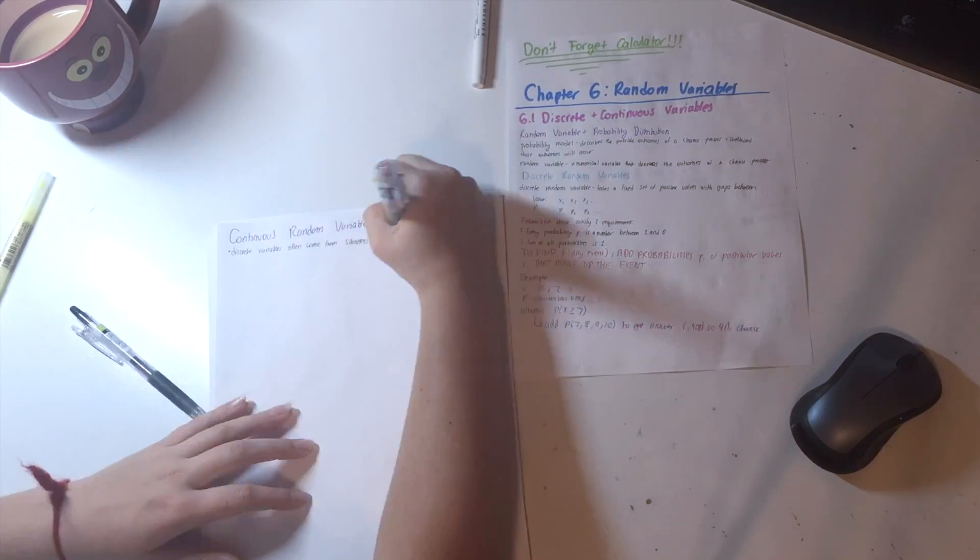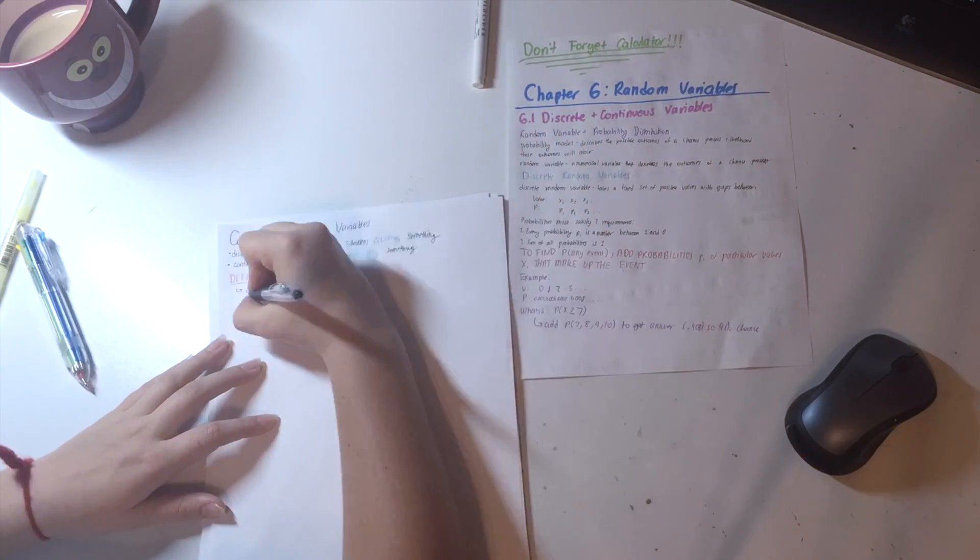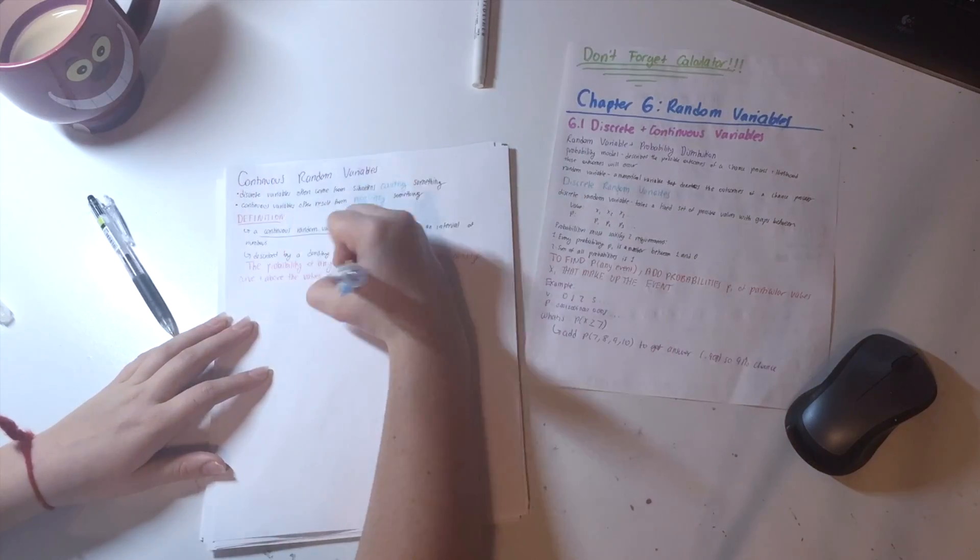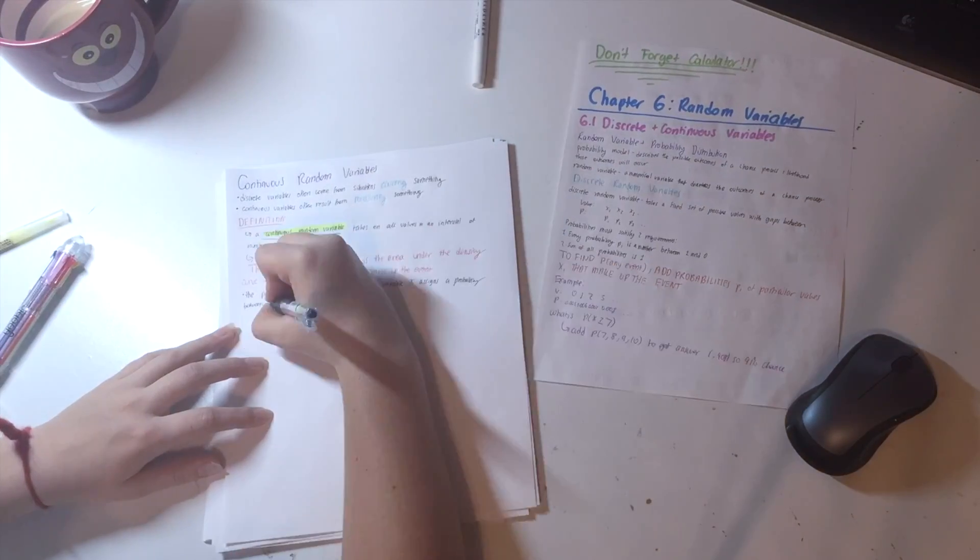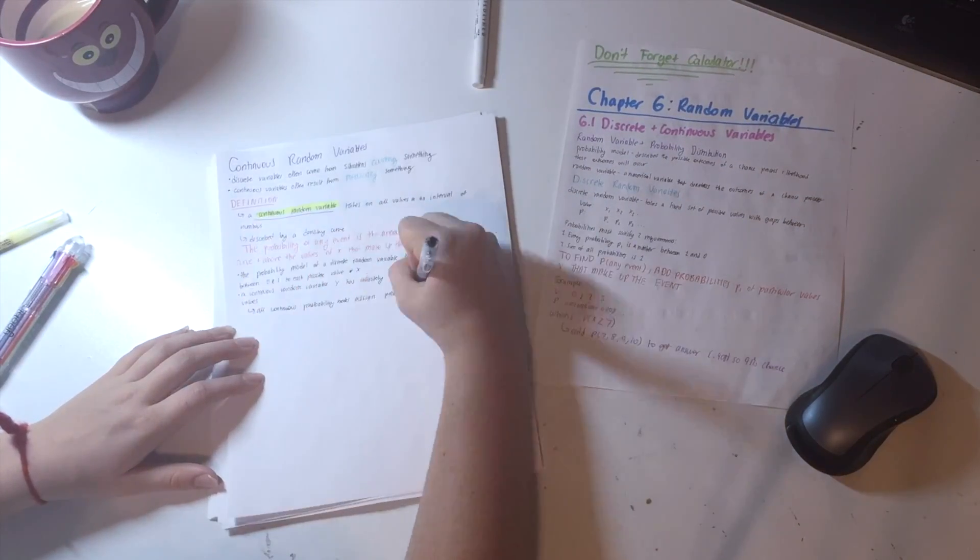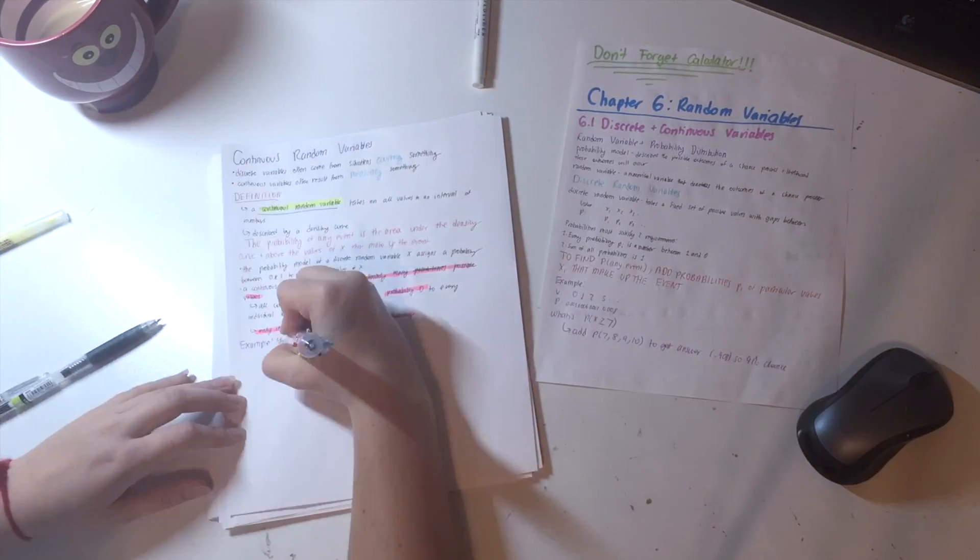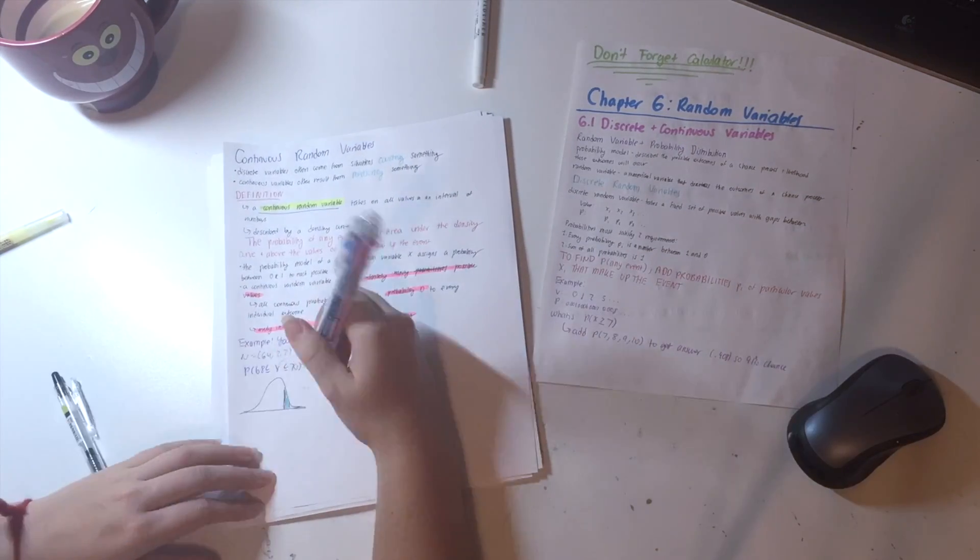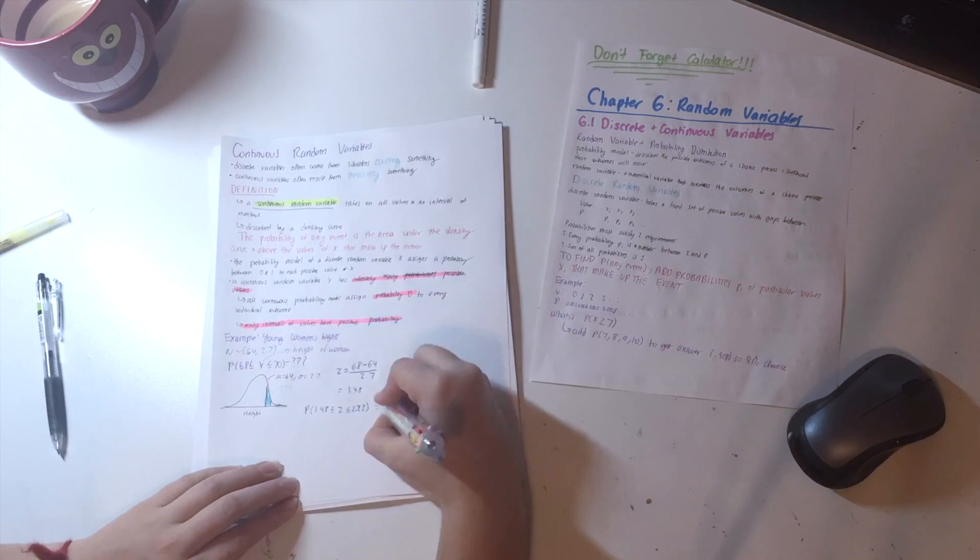So I start out writing the title of the chapter. You can see it says Chapter 6 Random Variables at the top. And then also you can see it says Don't Forget Calculator. That's just a little note section at the top just in case I need to remember anything really important.